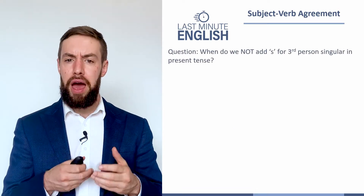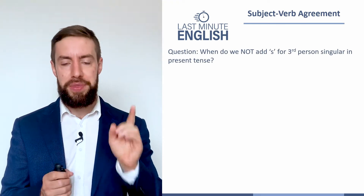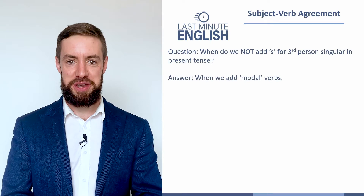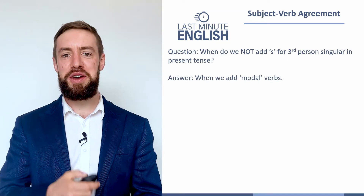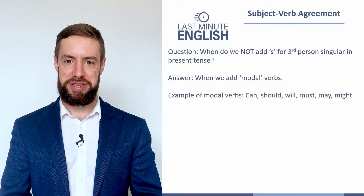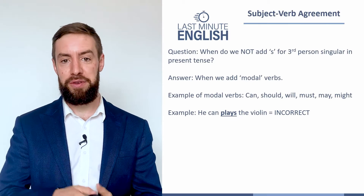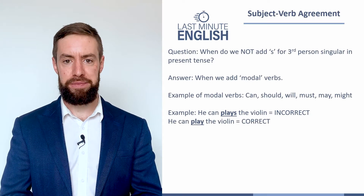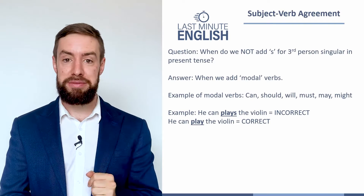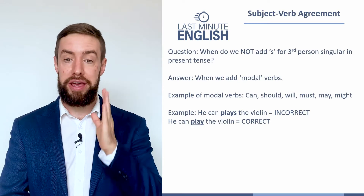When in the present simple tense in the third person singular do we not add an S? The answer is when we use modal verbs — ones like can, should, must, and others. For example, we wouldn't say 'he can plays the violin'; we would say 'he can play the violin.' Without 'can' it would be 'he plays,' but when we add can, should, must, or will, that S disappears.